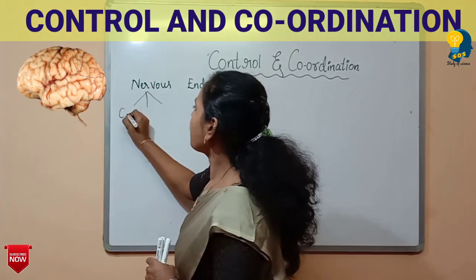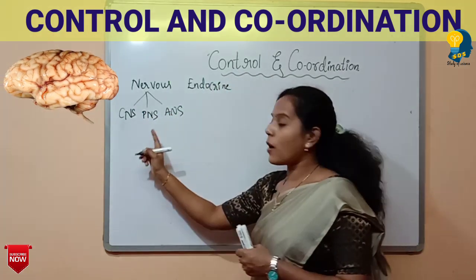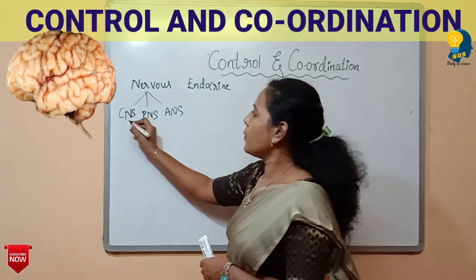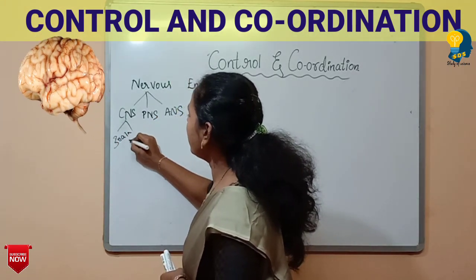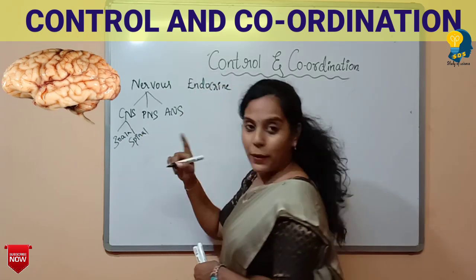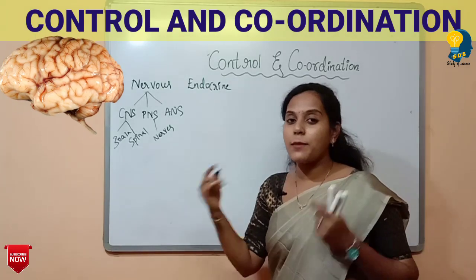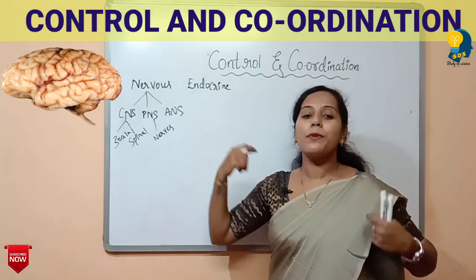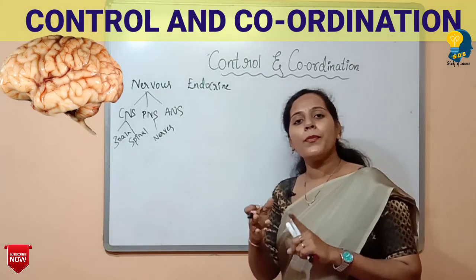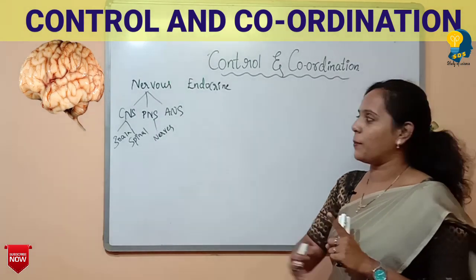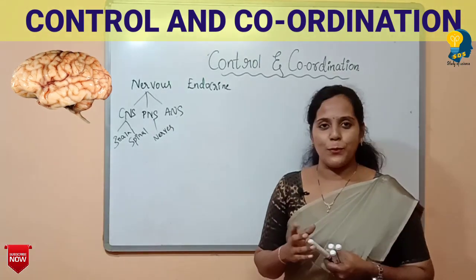The nervous system can be broadly classified into CNS, PNS, and ANS. CNS is the central nervous system, which consists of the brain and the spinal cord. PNS consists of nerves — the cranial nerves from the brain and the spinal nerves from the spinal cord. The third is the ANS, the autonomic nervous system, which is not under your control.